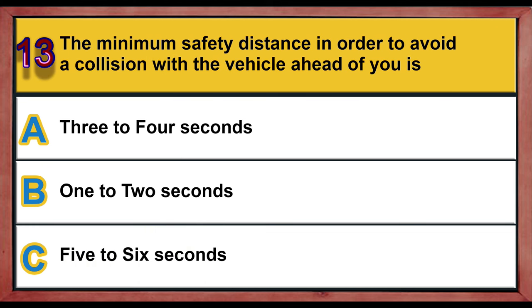Question 13. The minimum safety distance in order to avoid a collision with the vehicle ahead of you is: A. 3-4 seconds. B. 1-2 seconds. C. 5-6 seconds.